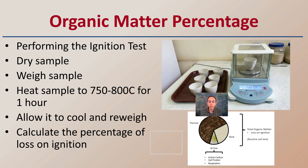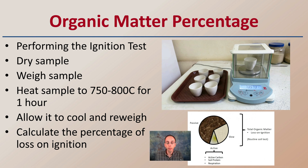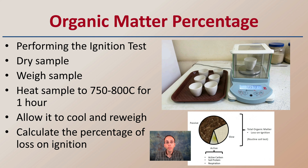Another way to classify soil is by looking at its organic matter. This is performed using an ignition test: you dry the sample, weigh it, then heat it to 750–800 degrees Celsius for about an hour. You then allow it to cool and reweigh it, calculating the percentage loss on ignition. You're essentially burning off the organic components of the soil, leaving only the minerals. This can really help classify a soil — for example, if someone walked through a compost pile, a very high organic matter reading could identify that particular soil type.